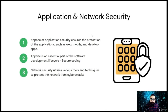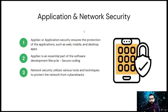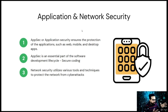Network security utilizes various tools and techniques to protect the network from cyber attacks, ensuring that internal networks are secure by protecting the infrastructure and inhibiting unauthorized access. For example, network security engineers use access controls like firewalls and detection systems like IDS and IPS to safeguard the network. In short, application security deals with software-level bugs in apps or websites, whereas network security involves implementing firewall and monitoring systems to safeguard the network from unauthorized access.